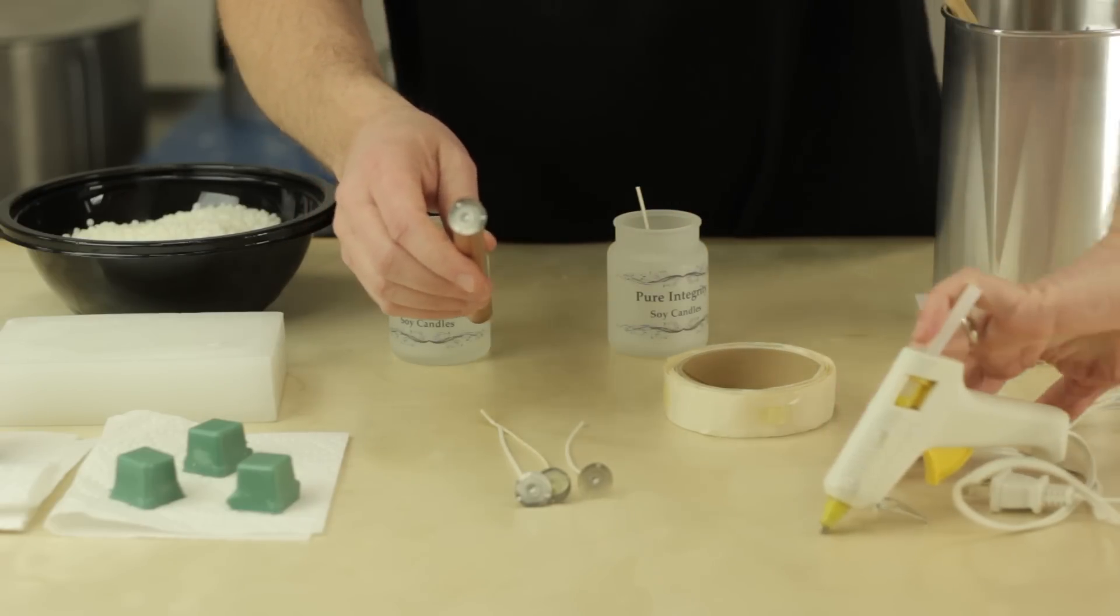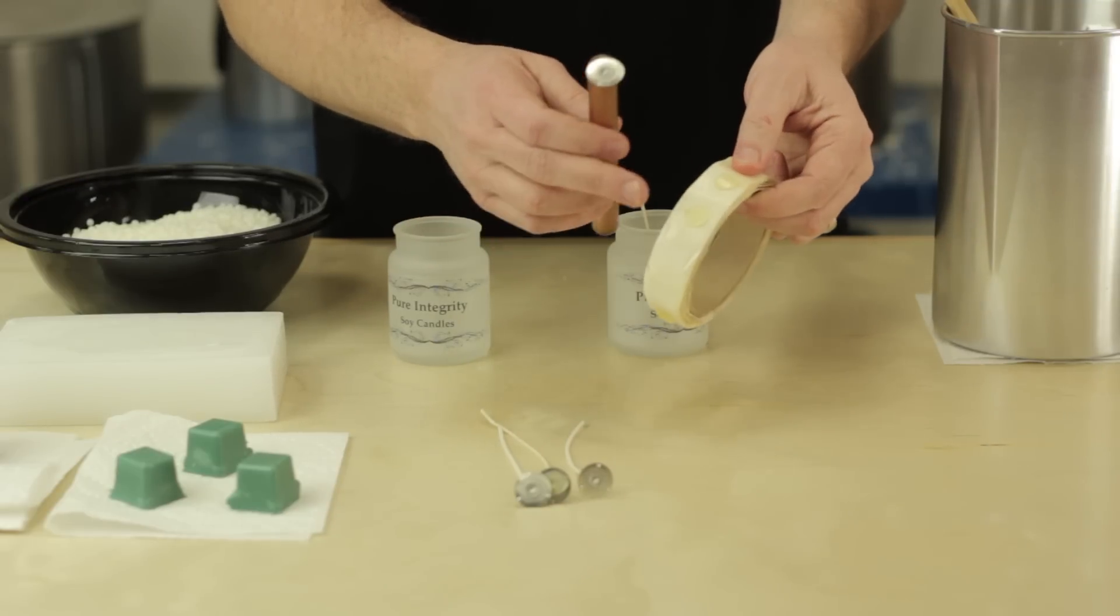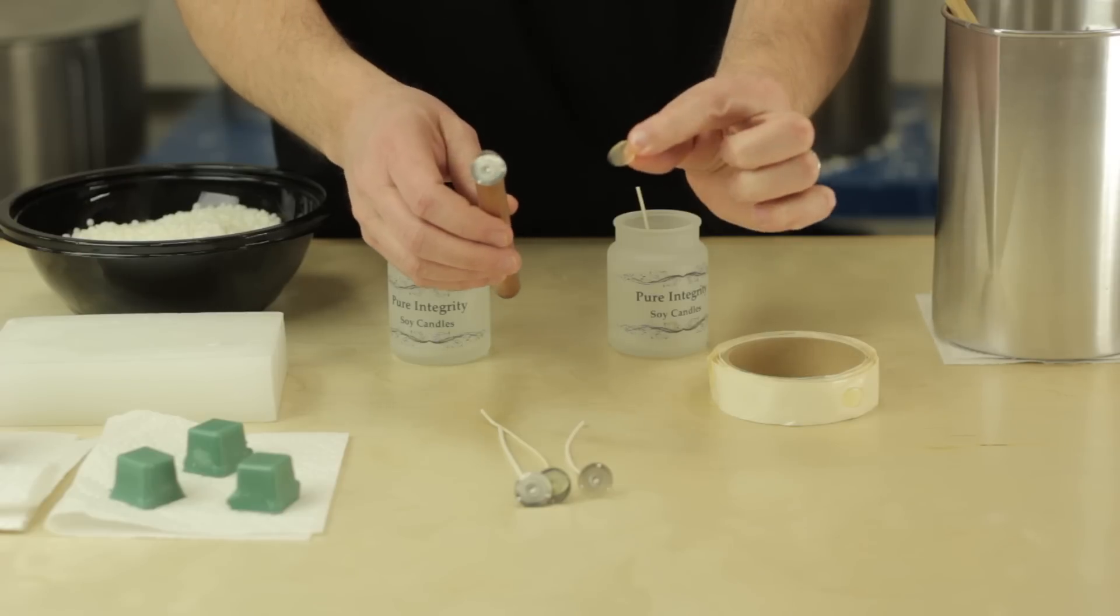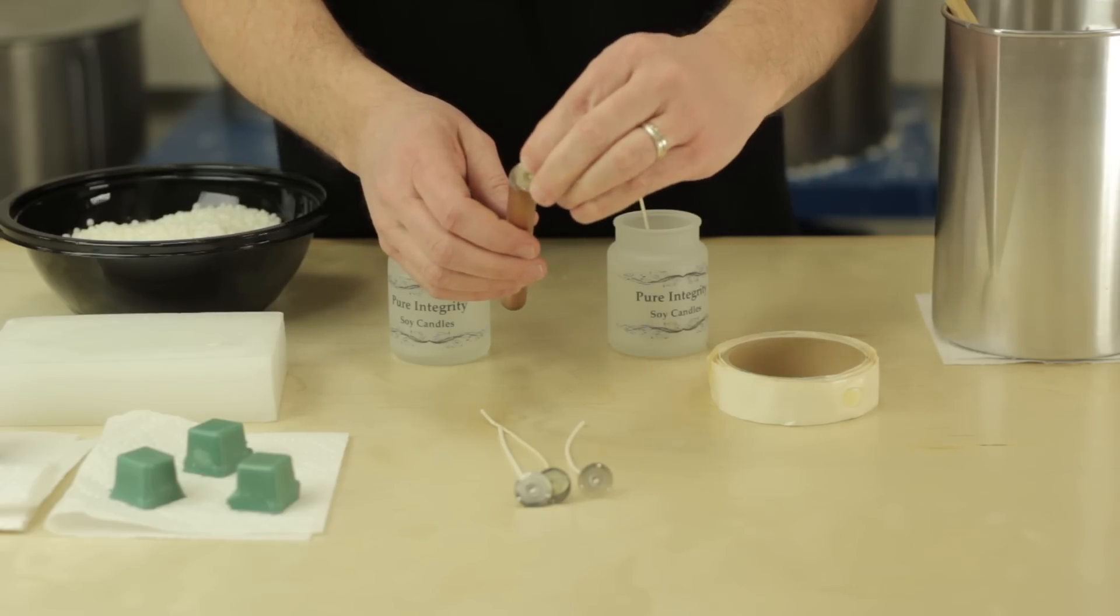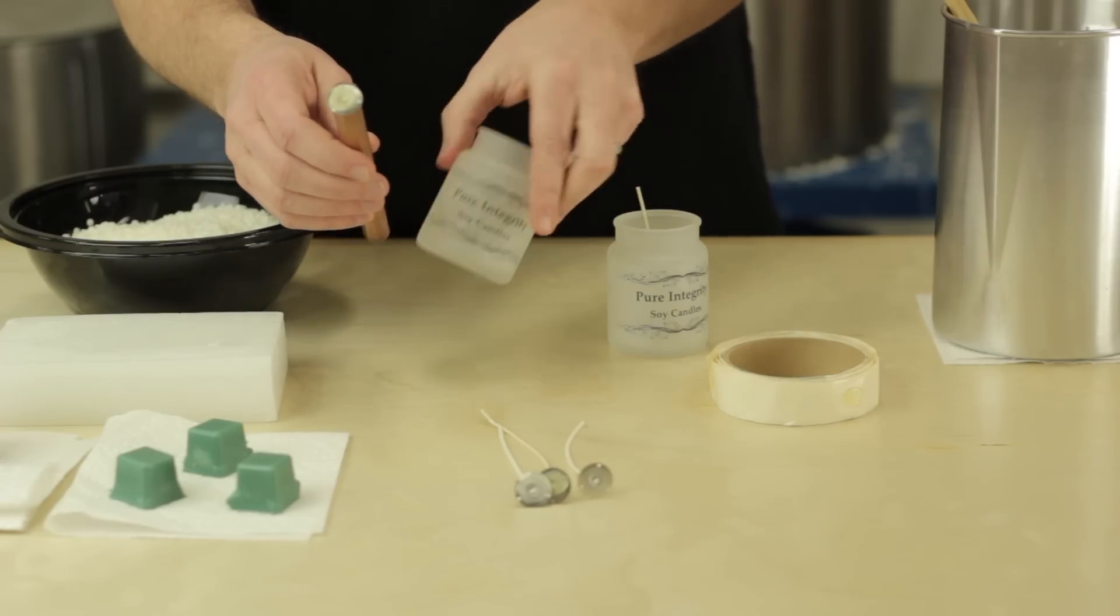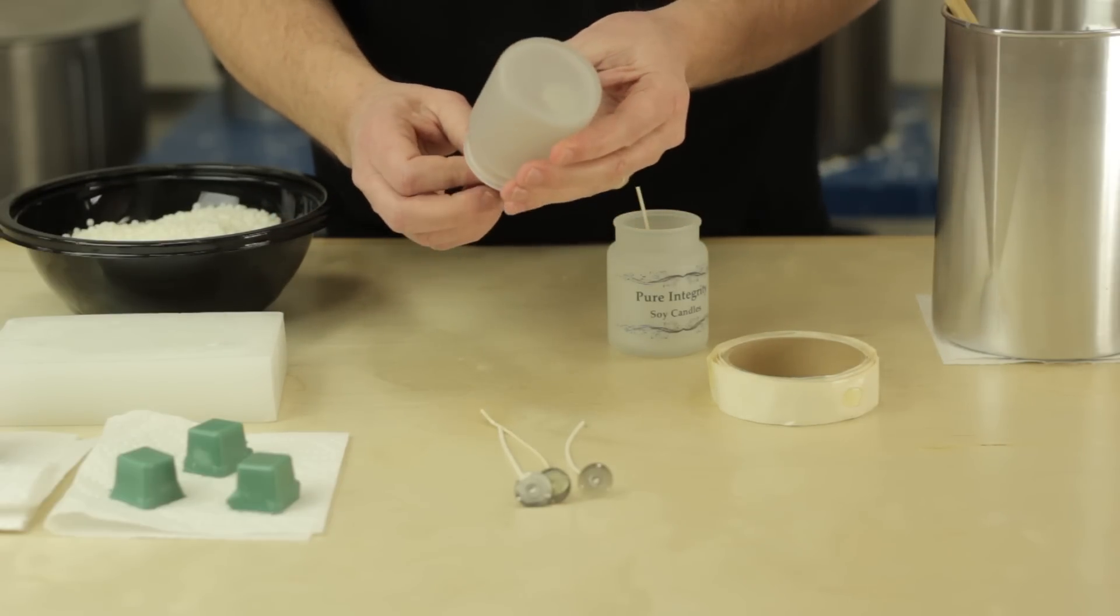Up here we have a hot glue gun that we're not going to use. I'm going to show you a nice safe adhesive to use with children. These are called glue dots. You can find them at most craft stores, and I'm just going to apply it right here to the bottom of my wick tab. Put the wick using a small piece of pipe or PVC into the bottom of the candle and make sure it's centered.